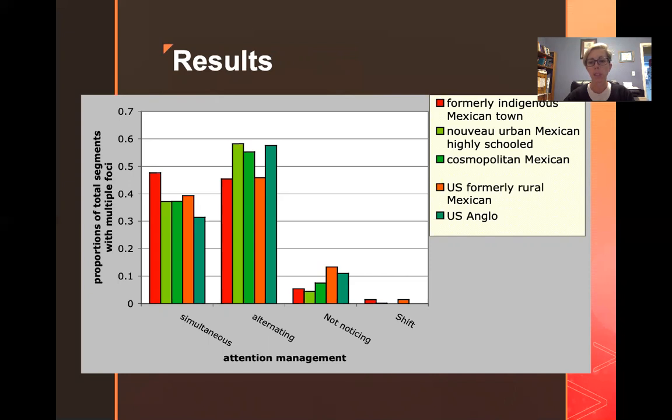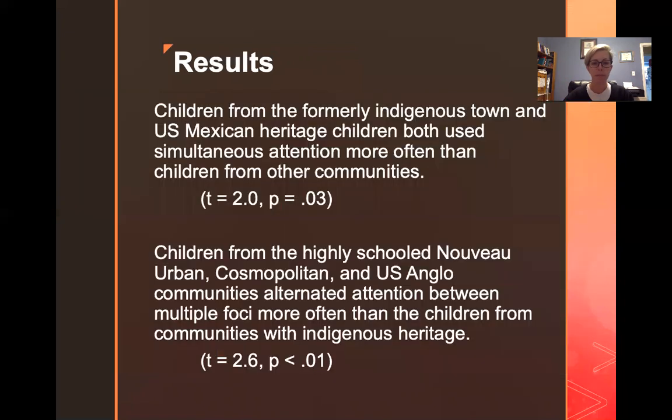In our post hoc tests, we looked at whether in particular, the formerly indigenous Mexican town and the U.S. formerly rural town were different than the other three groups. So this is called a planned comparison. We're not going to talk much more about that here. Essentially, this is a special kind of a test where you're looking at, my results are only going to go one way as opposed to saying, I think there's a difference. So this was a planned comparison.